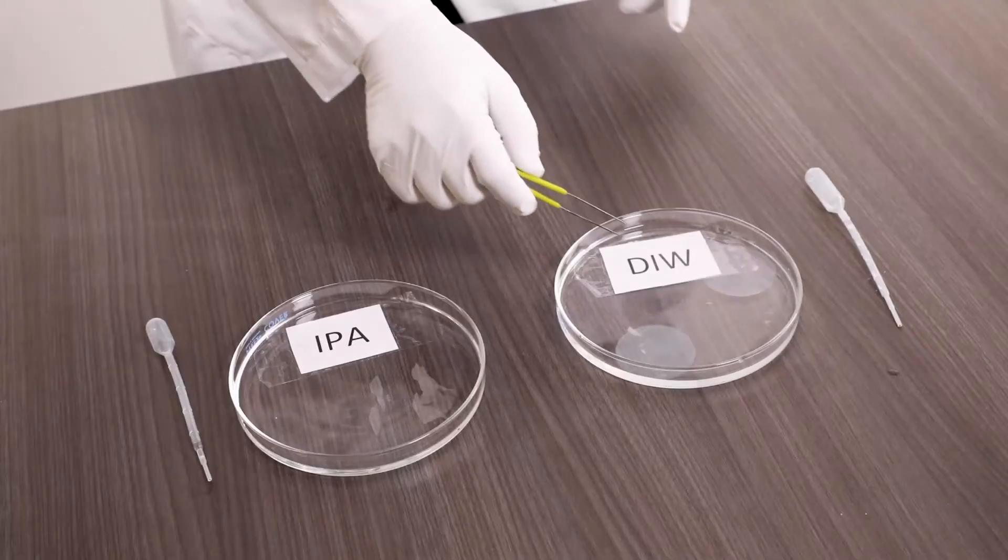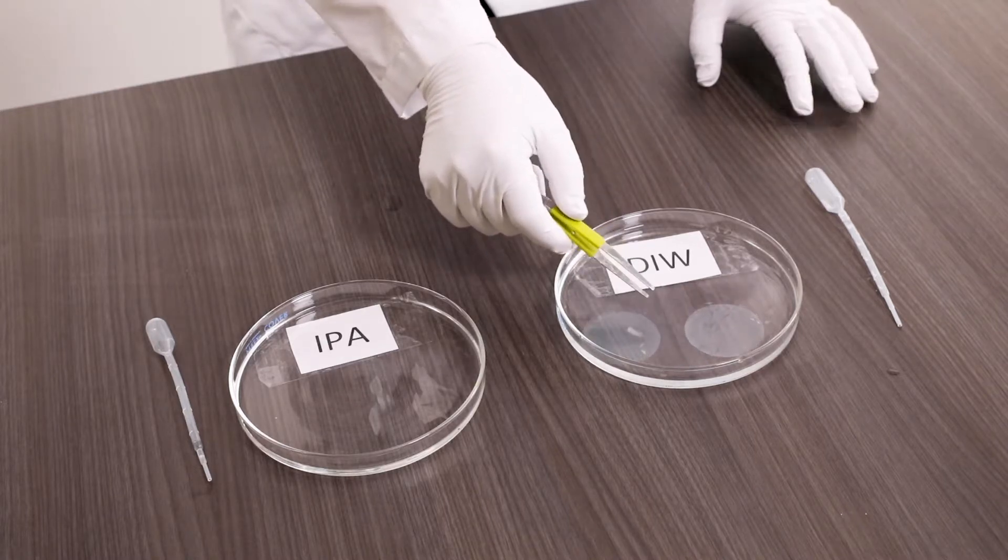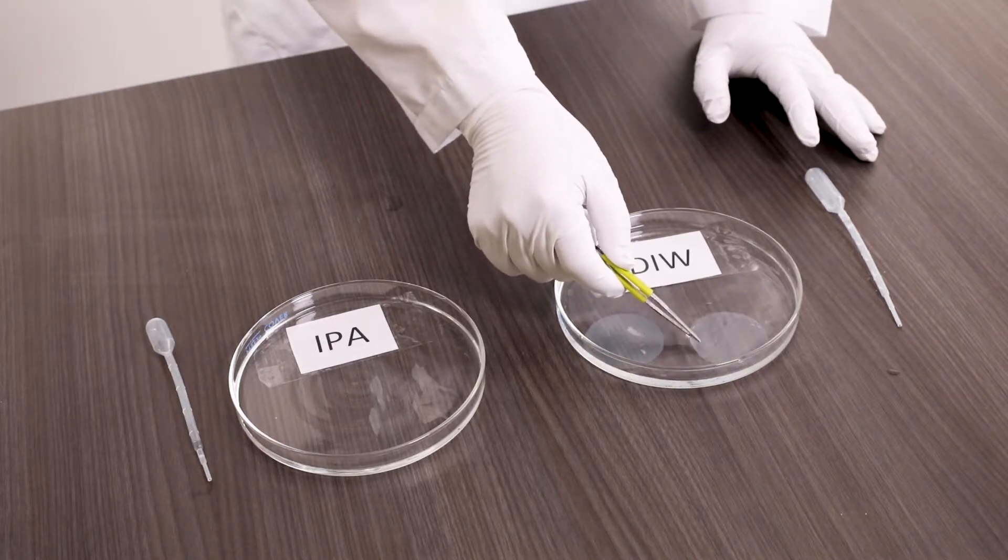This process we call pre-wetting. So PTFE after you do the pre-wetting in IPA, we can use it in DI water. What's the difference? Why do we do the non-dewetting surface modification on PTFE membrane? You will see the difference.